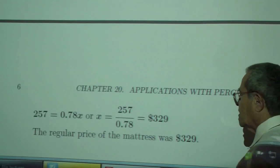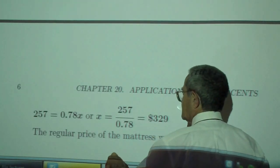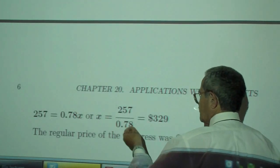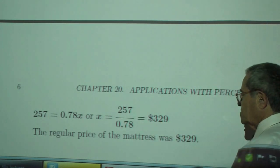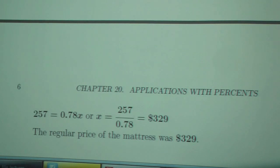And that is also $257. Divide both sides by 0.78, you get $329. The regular price of the mattress was $329.